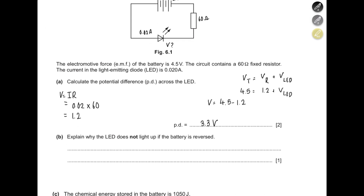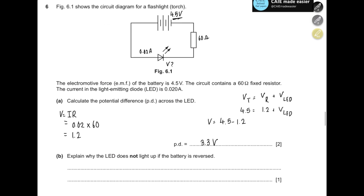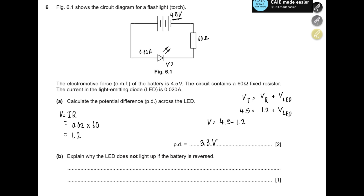Explain why the LED does not light up if the battery is reversed. Because the LED is a diode, and a diode only allows current to flow in one direction.